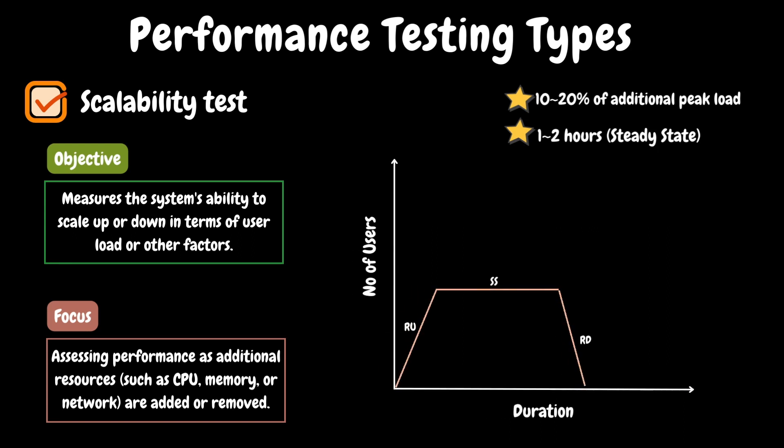Scaling can be achieved through two methods: horizontal scaling and vertical scaling. In horizontal scaling, additional machines or servers will be added to the existing infrastructure — this is also referred to as scaling out. In vertical scaling, they will add additional capacity like CPU, RAM, etc. to the existing server — this is also called scaling up. During interviews, you might be asked to explain the concept of horizontal scaling or vertical scaling.